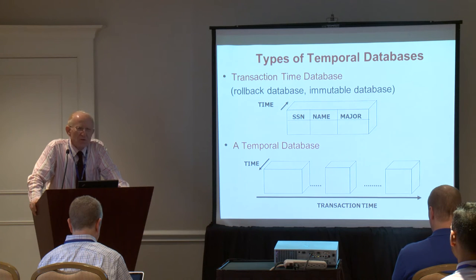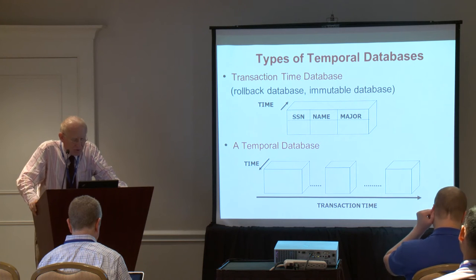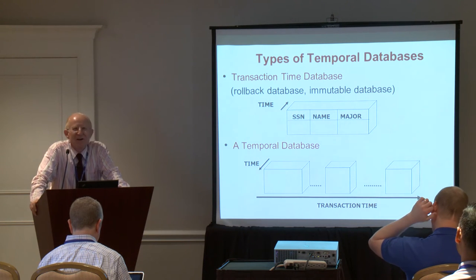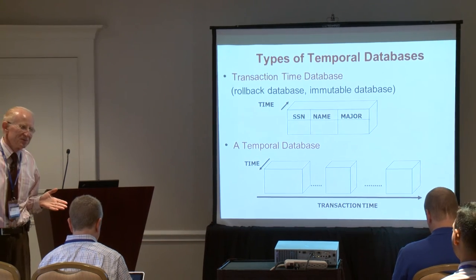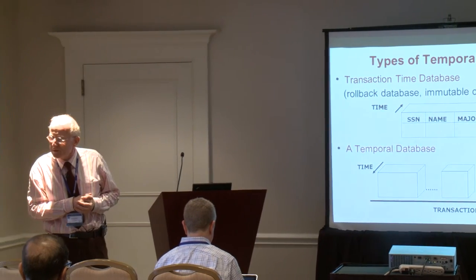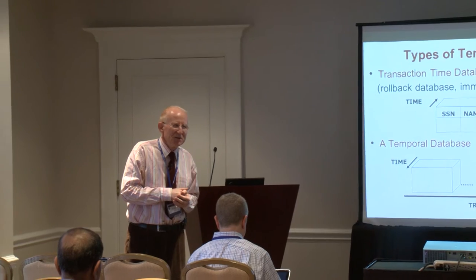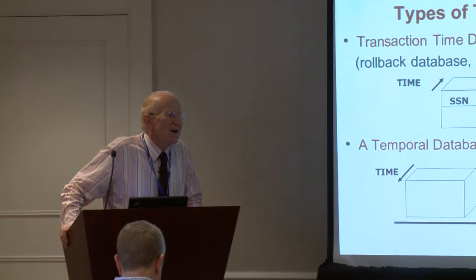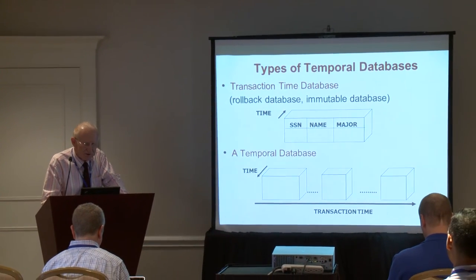I use the term 'temporal' loosely to mean any type of time support. The fourth type, shown at the bottom, is a bi-temporal database because it has two time dimensions — valid time and transaction time. It is the most complete, giving you the entire history with a trace of all changes.